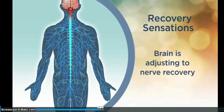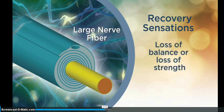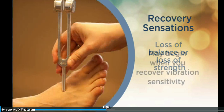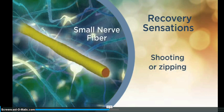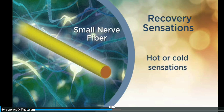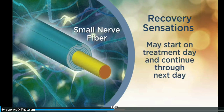In time, the brain adjusts to the new neural signals and the tenderness subsides. Fatigue, heavy, or wobbly sensations can occur in patients who have experienced loss of balance or loss of strength as part of their disease. These sensations usually begin when the patient recovers vibration sensitivity as measured by the tuning fork test. Sharper shooting or zipping sensations occur in patients who reported pain or hot or cold sensations. These recovery sensations may start on the day of treatment and continue through the next day. They can indicate that small diameter nerves responsible for pain, hot and cold sensations are recovering function.